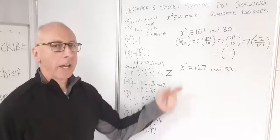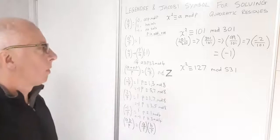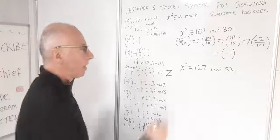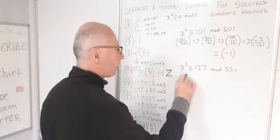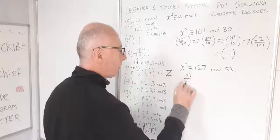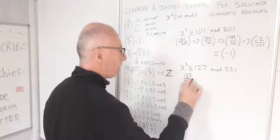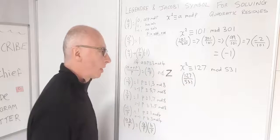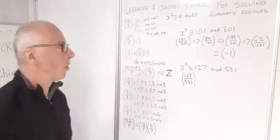Now for the second question: x² ≡ 127 mod 531. Let's set up our Jacobi symbol: (127/531). That's our Jacobi symbol ready to go.